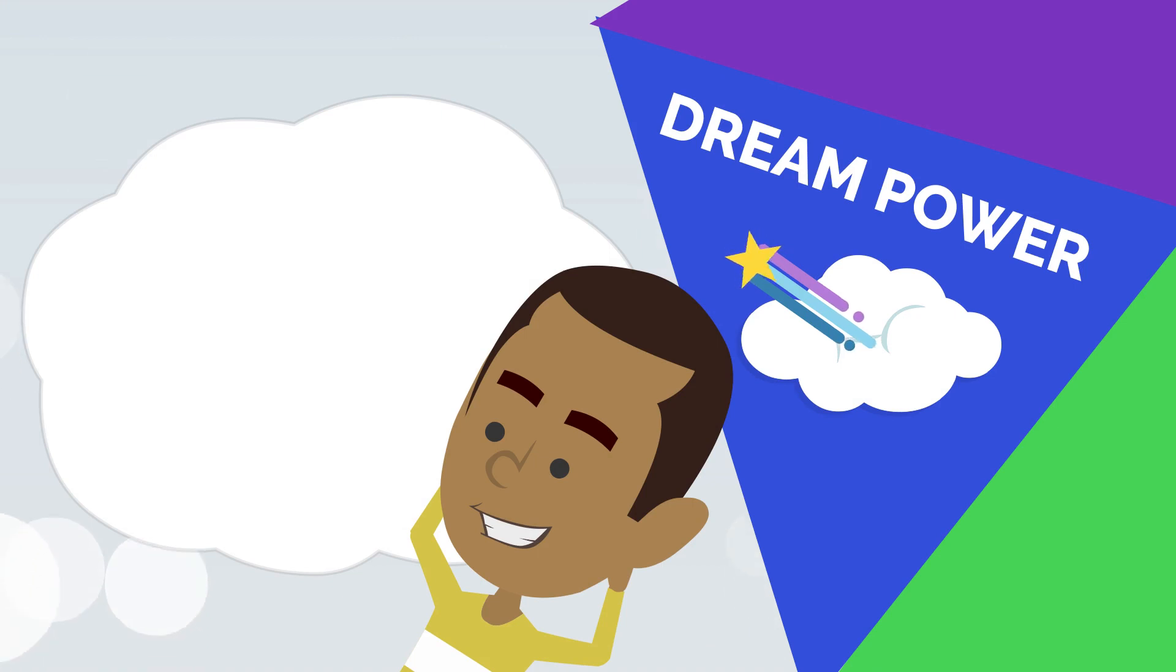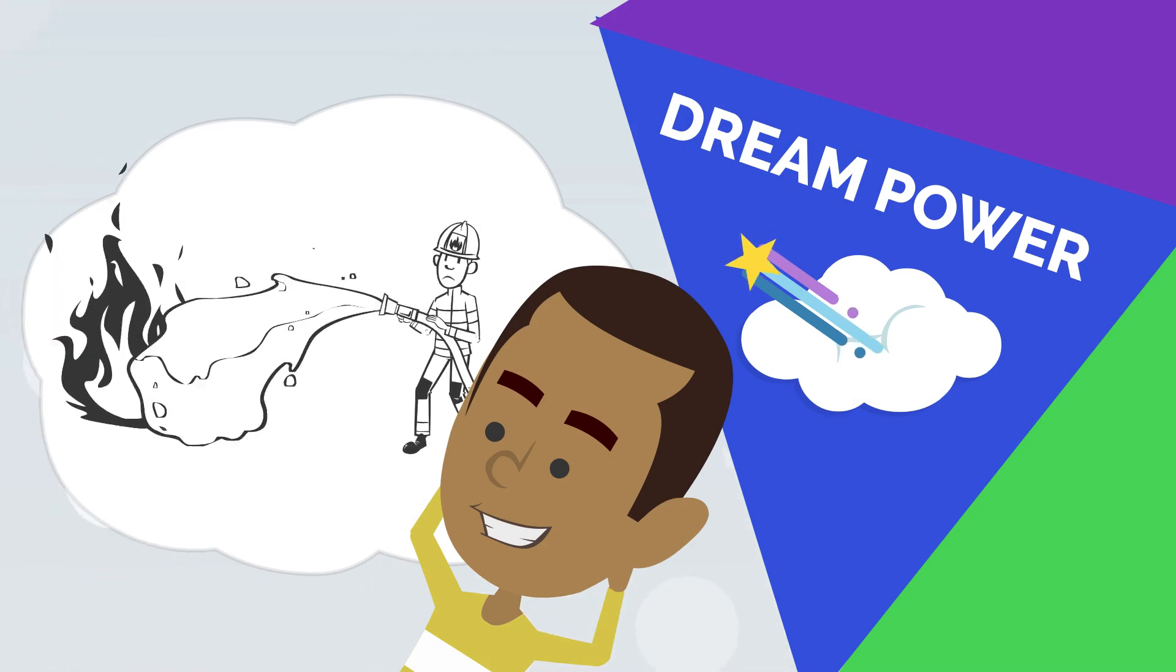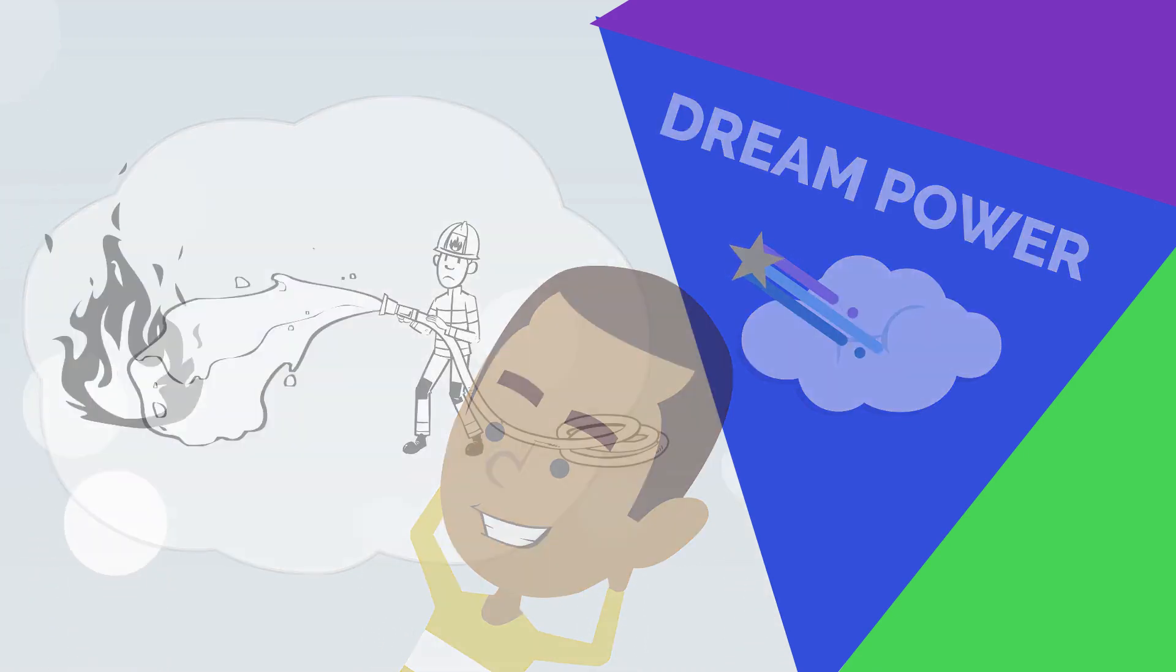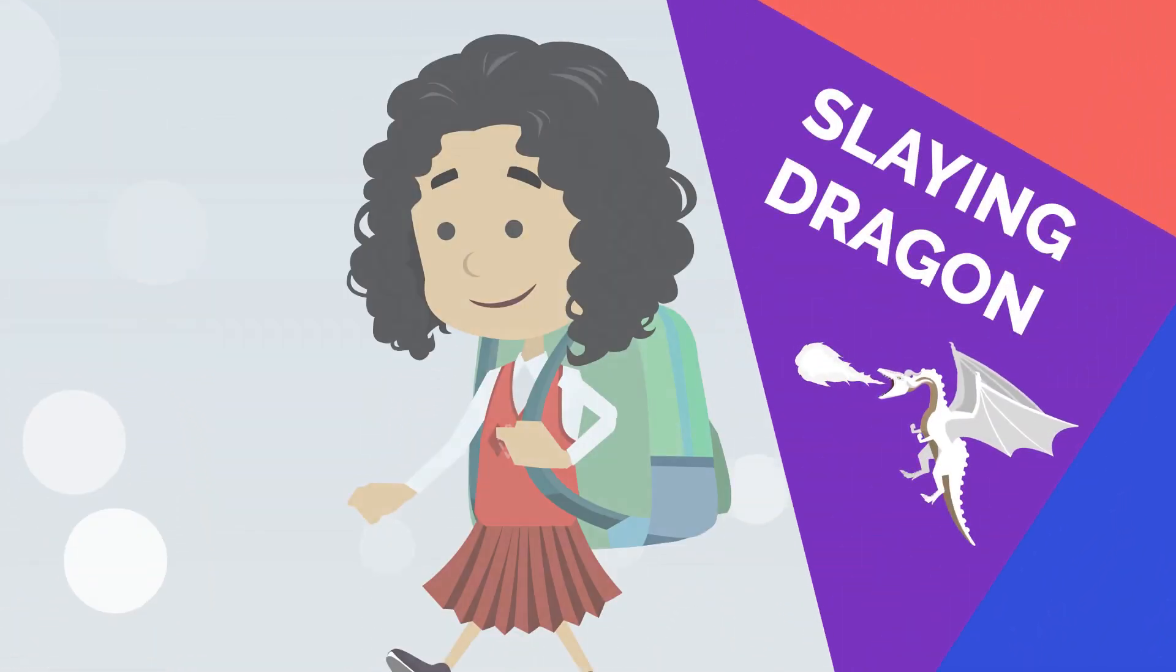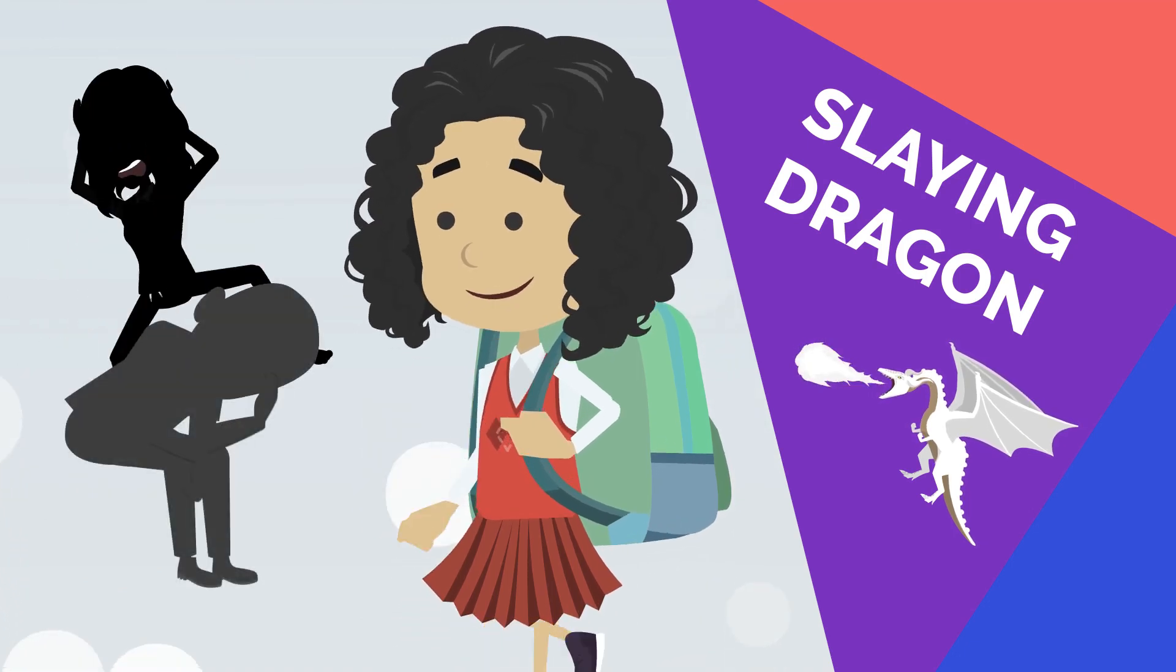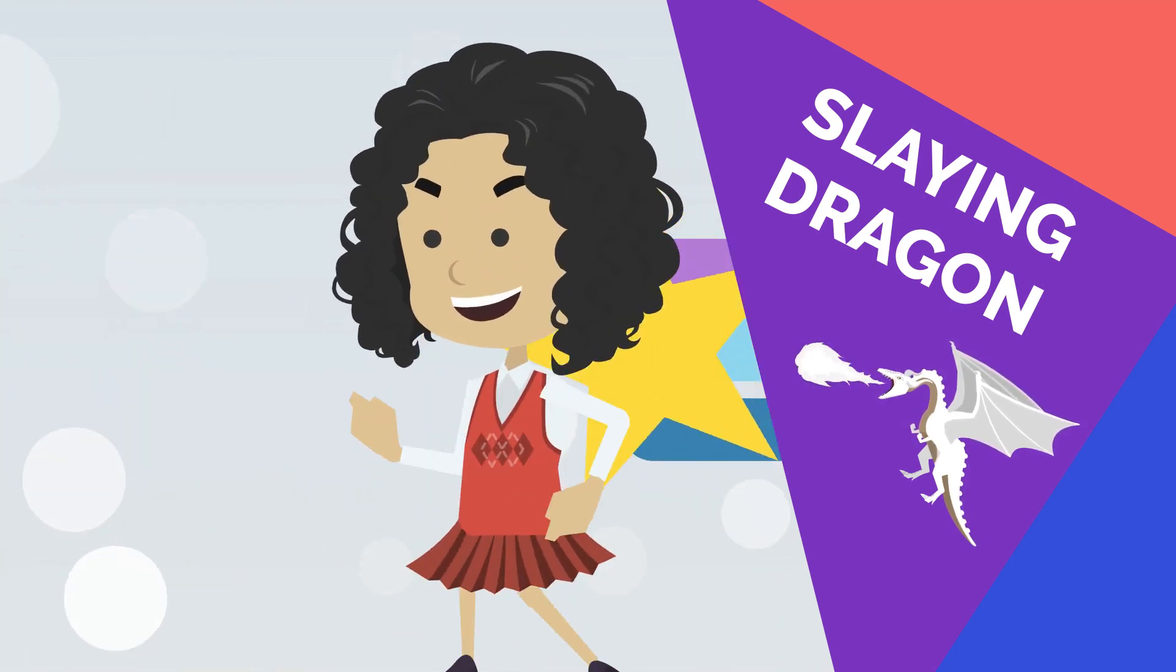Fourth is dream power. We teach children how to create their vision, achieve their goals, and manifest their dreams. Fifth is slaying dragon. This is where we teach children how to bust through fear, failure, mistakes, and change and go for their dreams.